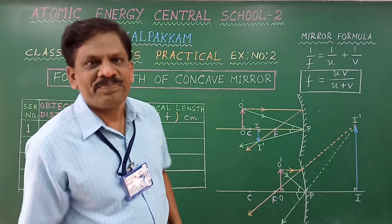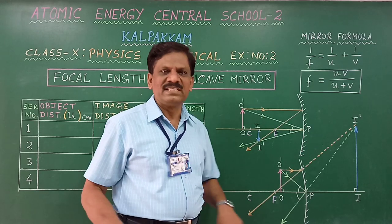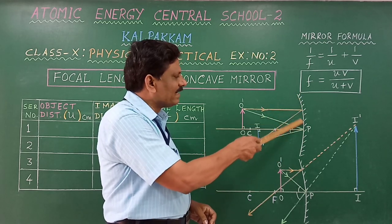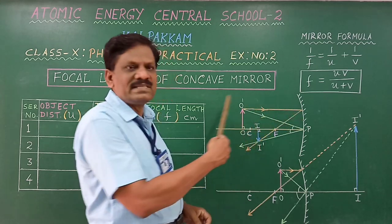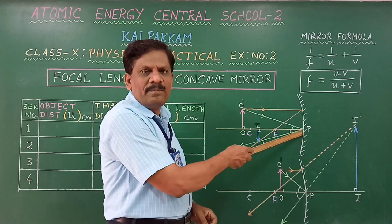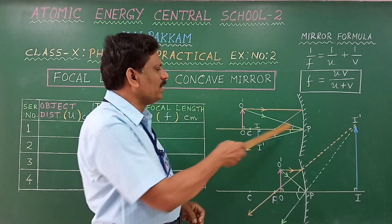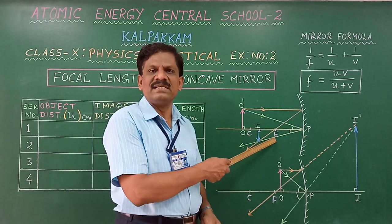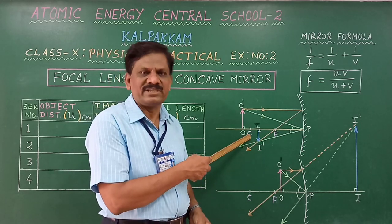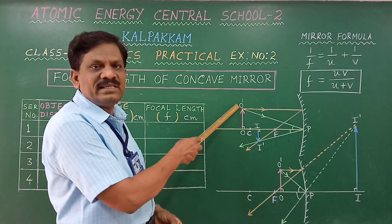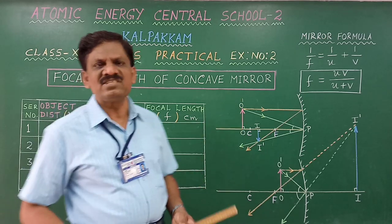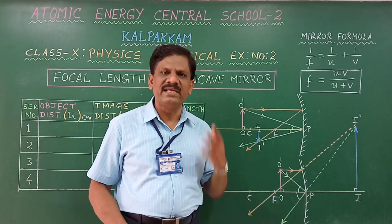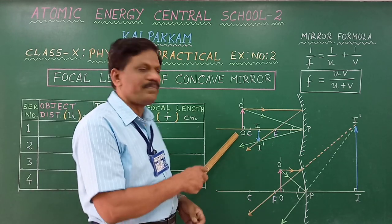For any mirror, there are different positions of the object and corresponding positions of the image. This is the concave mirror whose reflecting surface is bulged inwards and facing towards the left. P is the pole of the mirror. The line passing through the pole is called the principal axis. Point F is the principal focus, point C is the center of curvature, and O-O' is a linear object placed perpendicular to the principal axis.